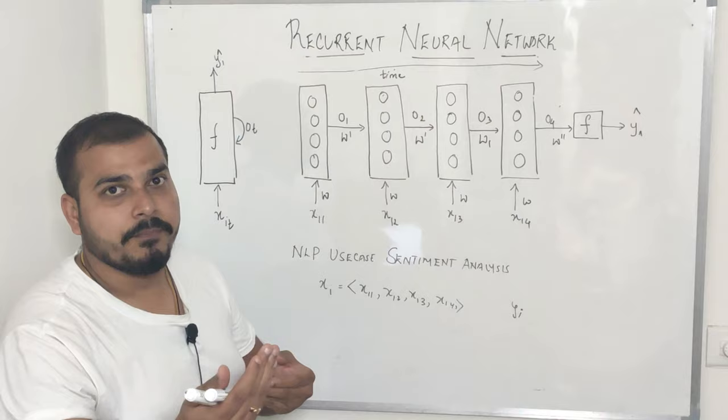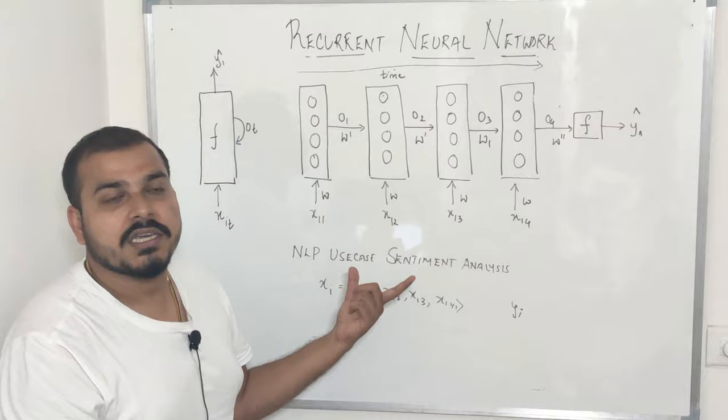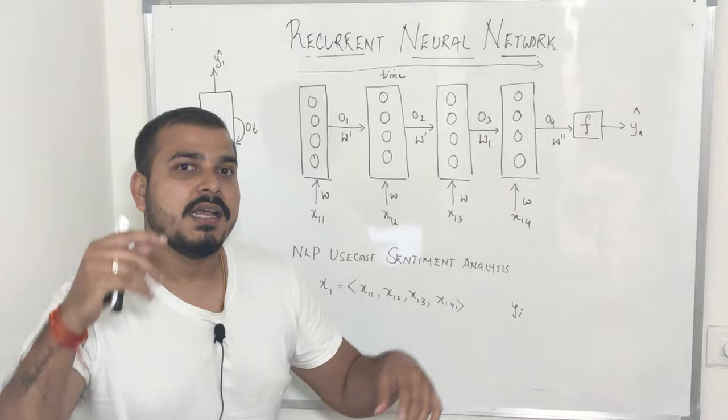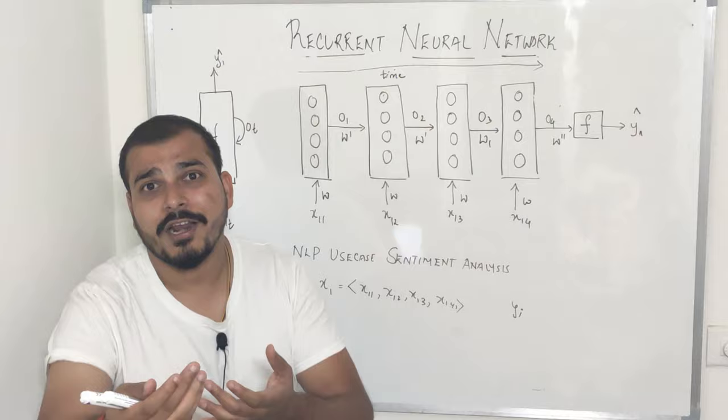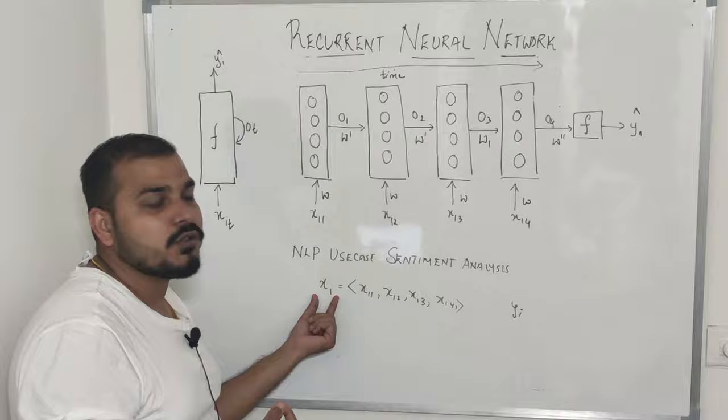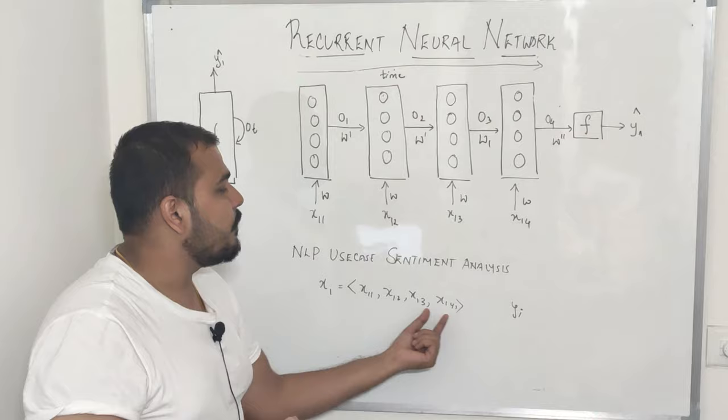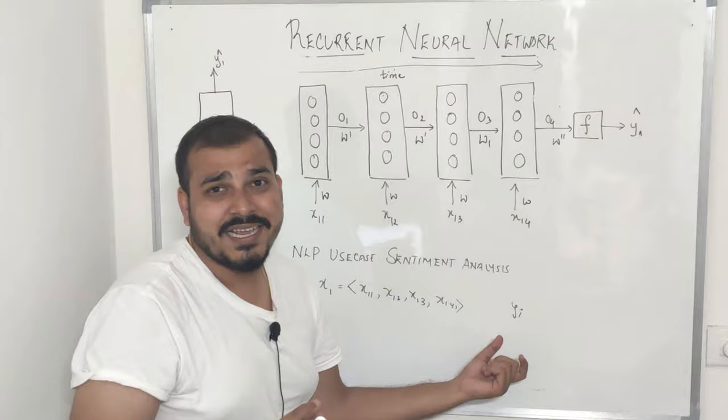That basically means, suppose I want to solve an NLP use case which is sentiment analysis. In sentiment analysis, we have a sentence and we try to determine whether that is a positive or a negative review. Suppose this is my sentence one and inside the sentence I have four words: 'this food is bad.' According to this, I have my output, which will say zero because this particular review is a negative review.